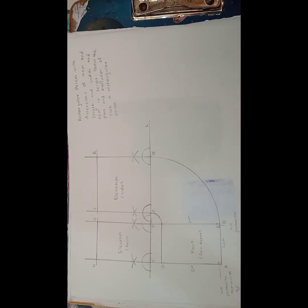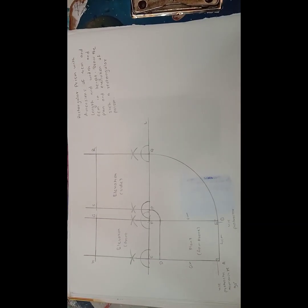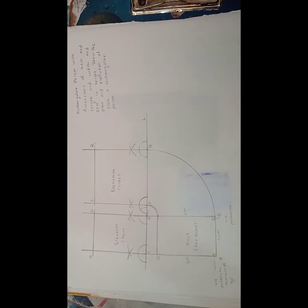Here we are going to draw the rectangular prism with the dimension of 4 cm in length and width and 6 cm in height. Draw the plan and elevation of such rectangular prism.